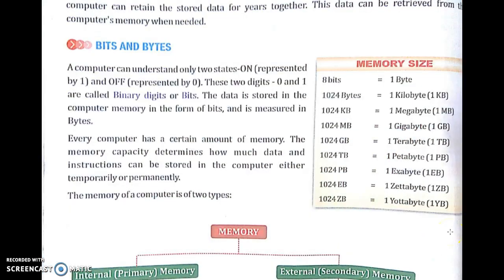8 bits is equal to 1 byte. 1024 bytes is equal to 1 kilobyte (1 KB). 1024 KB is equal to 1 megabyte (1 MB). 1024 MB is equal to 1 gigabyte (1 GB). 1024 GB is equal to 1 terabyte (1 TB). 1024 TB is equal to 1 petabyte (1 PB). 1024 PB is equal to 1 exabyte — exabyte is new for me also. Beyond that: zettabyte and yottabyte. Wow, so much memory space!